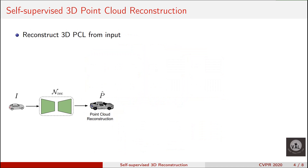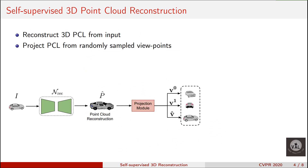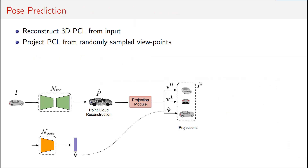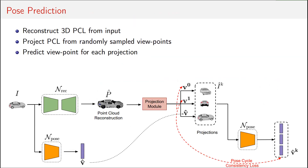In our approach, the reconstructed point cloud is projected onto 2D from multiple randomly sampled poses. Each projected image is then again reconstructed, and all the reconstructions are forced to be similar. To train the pose prediction network, we similarly project reconstructions from randomly sampled poses. The network must correctly predict these pose values.